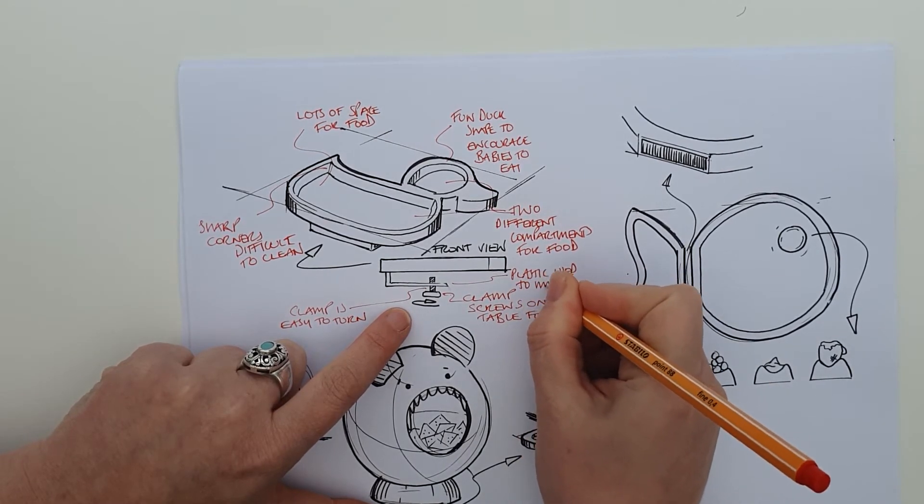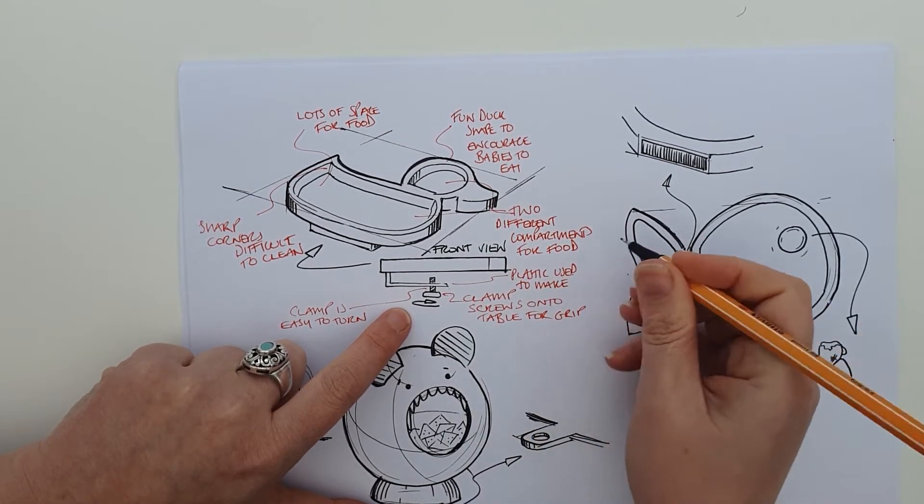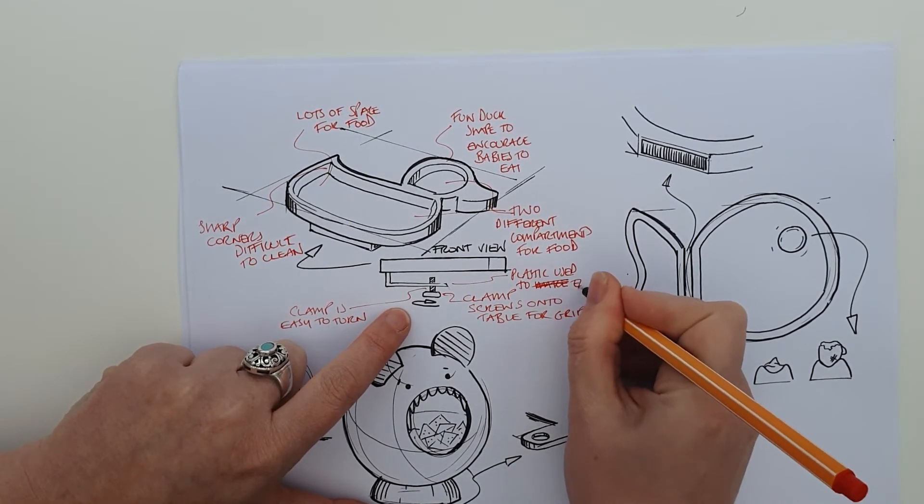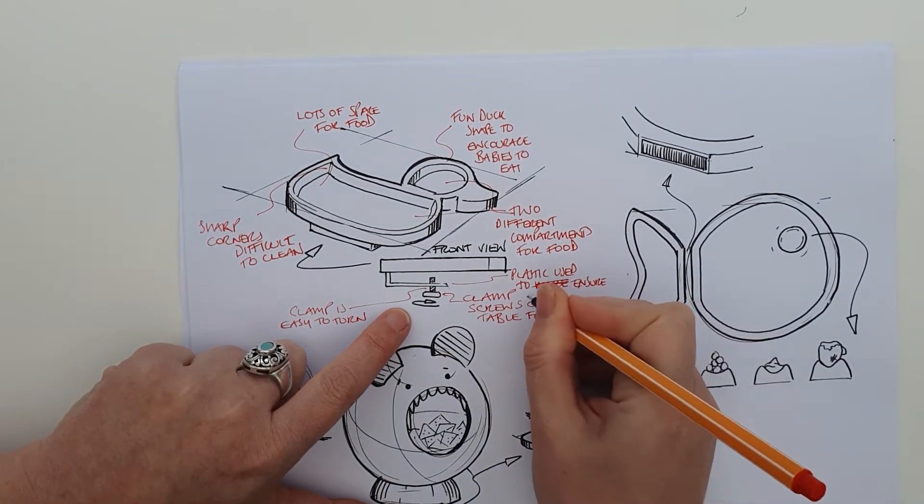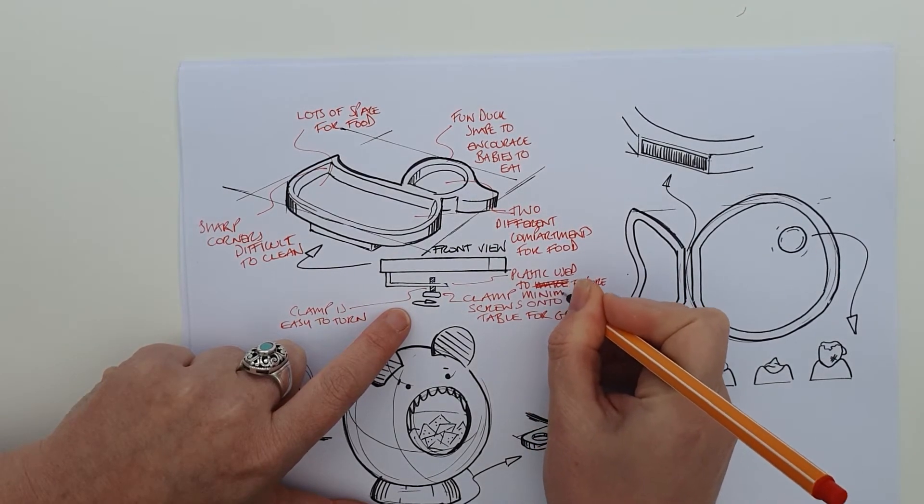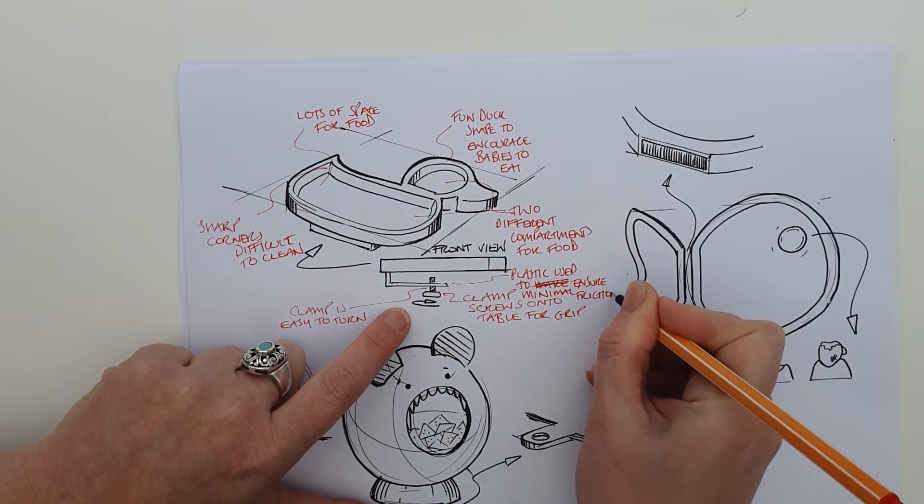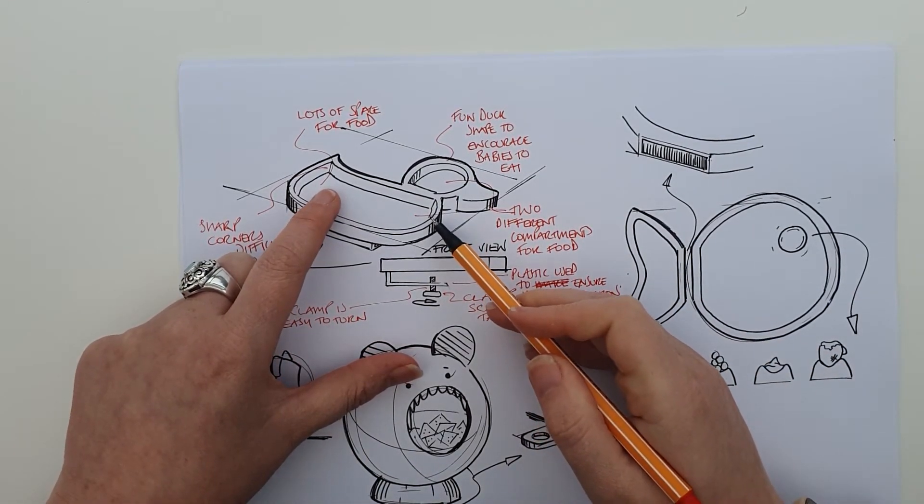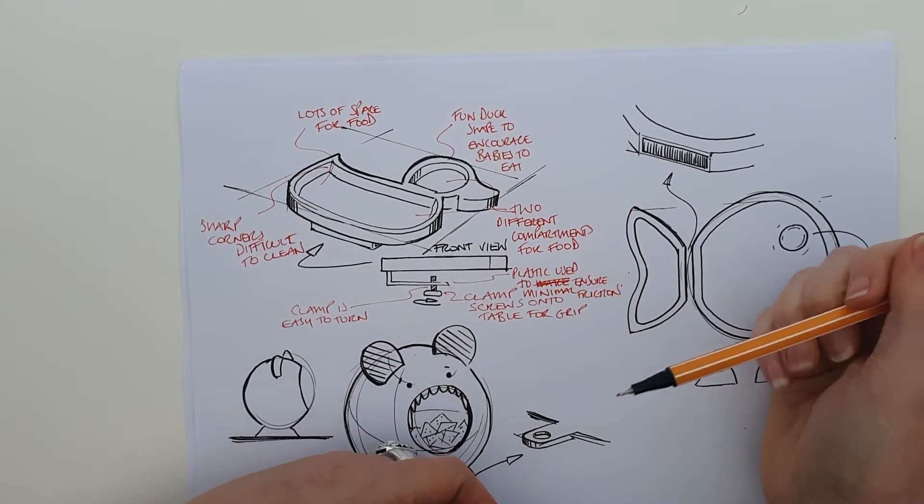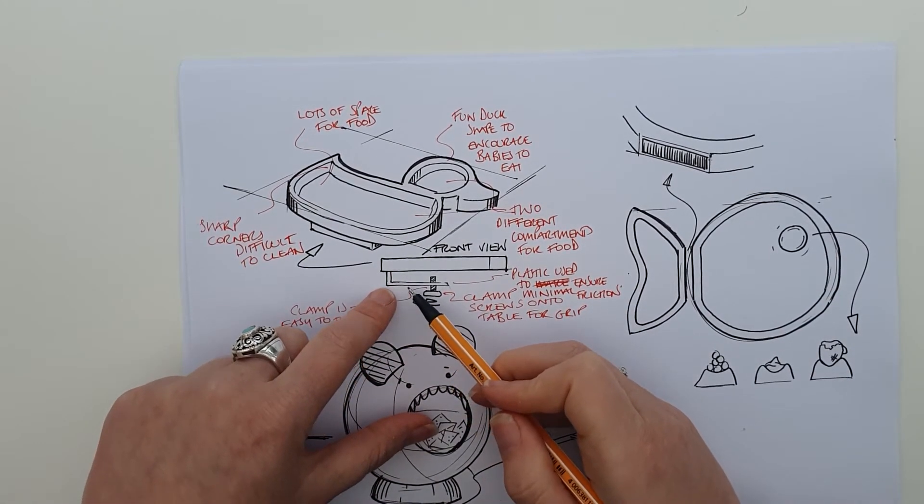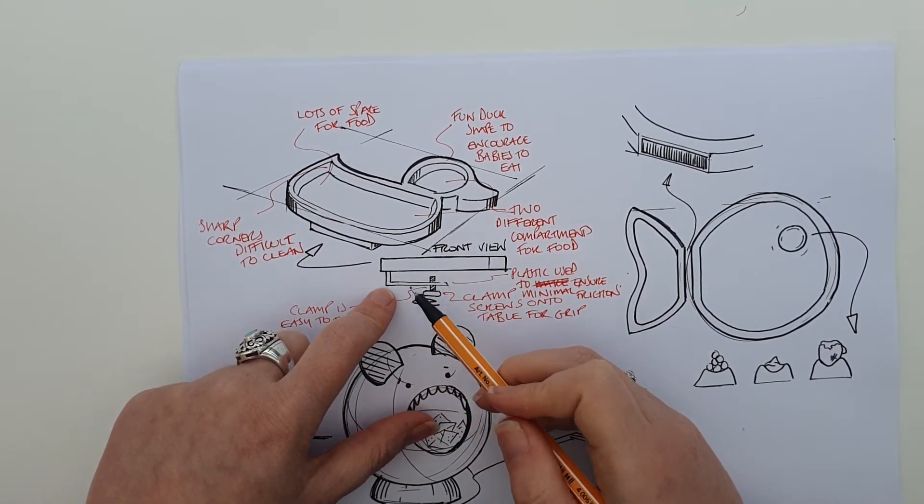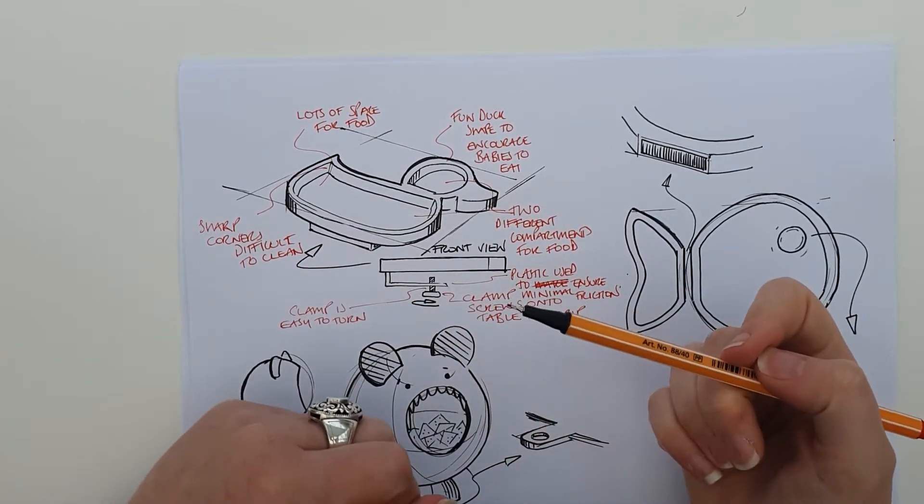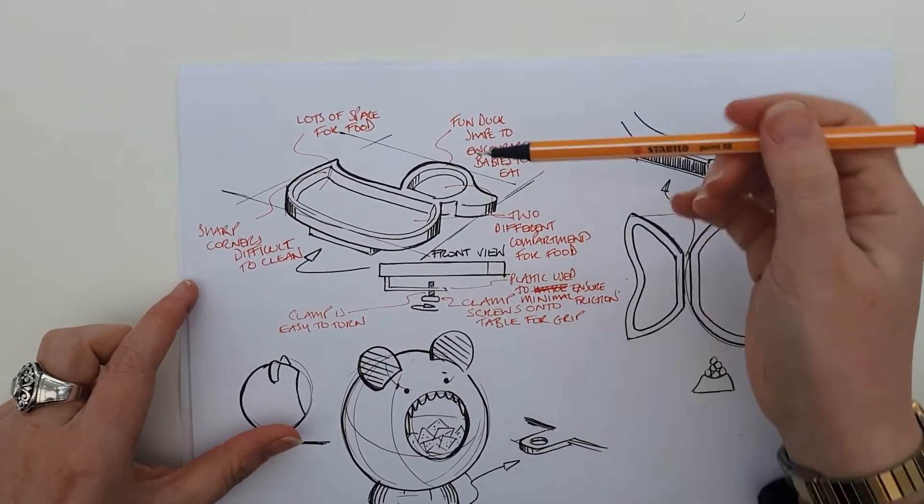So plastic used to make - actually, to ensure minimal friction. We could talk about the wood - we could do quite a hard wood so that the grain is not too open. We could talk about how plastic can be brightly colored so that it can contrast with the wood here. There's loads of stuff we could talk about, and as you can see, I've got tons and tons of annotations.